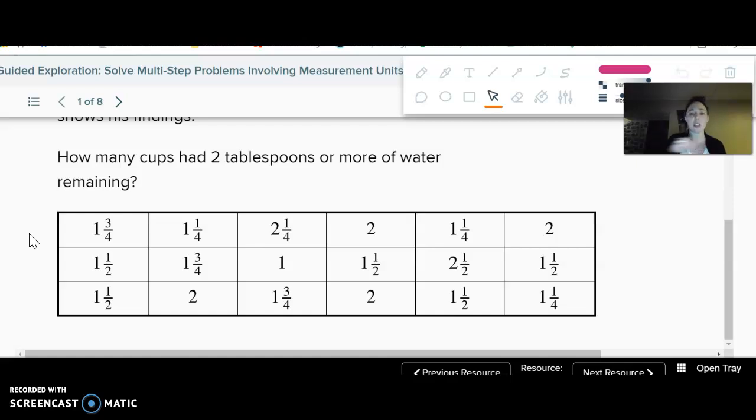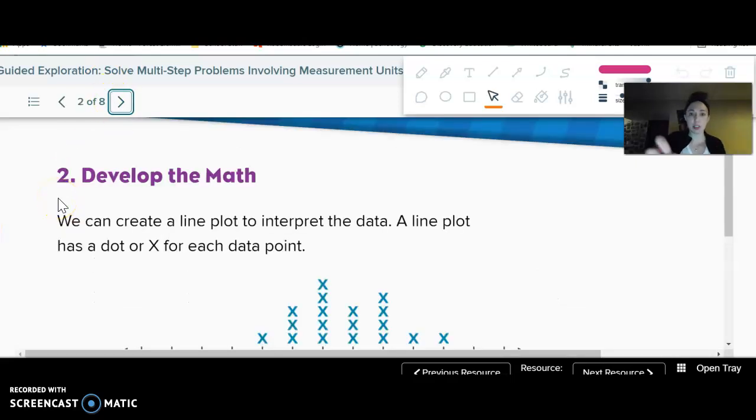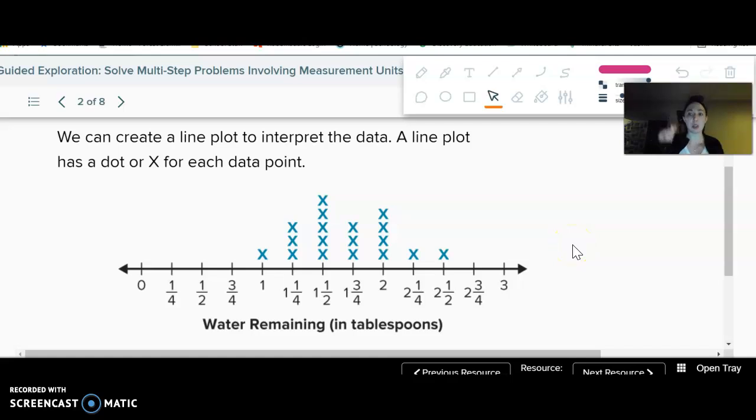So we have this table here that shows all the different cups that he'd set out. All what, 18 of them? So that's one way to represent data, right? Data is just information, often numbers that we are gathering. So how many cups had two tablespoons or more of water remaining? We could use the table to figure it out. We could also use a line plot. So in your notes, go ahead and write, we can represent data in a line plot. Not to be confused with a line graph that actually has a line. This is where you're plotting points on this line, so it's called a line plot. It has an X or a dot for each data point.